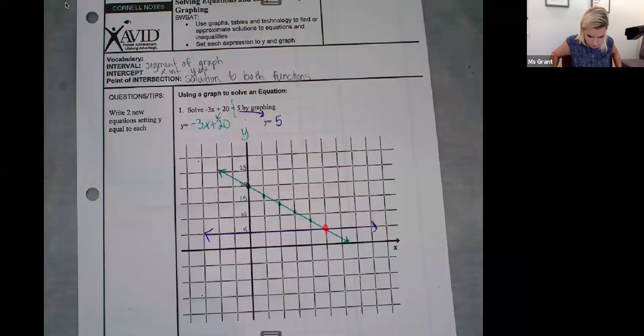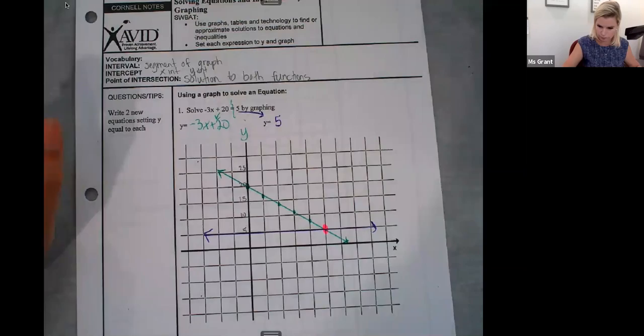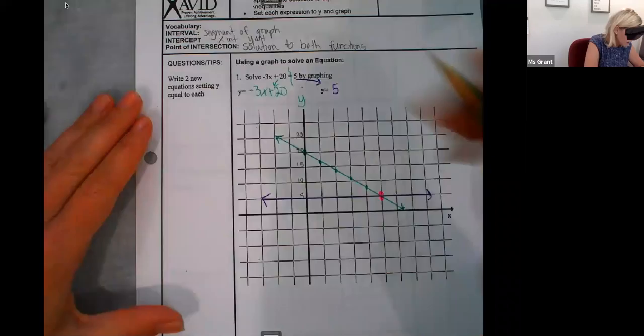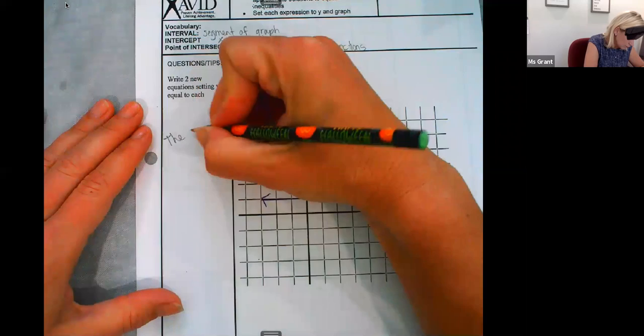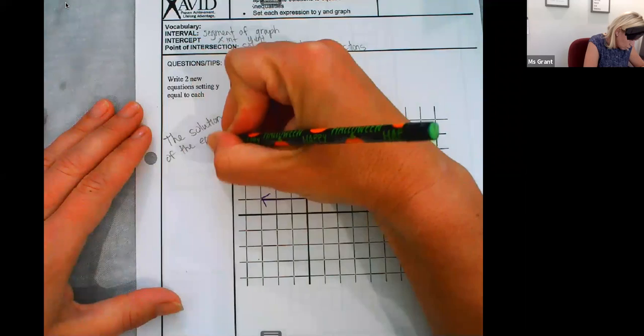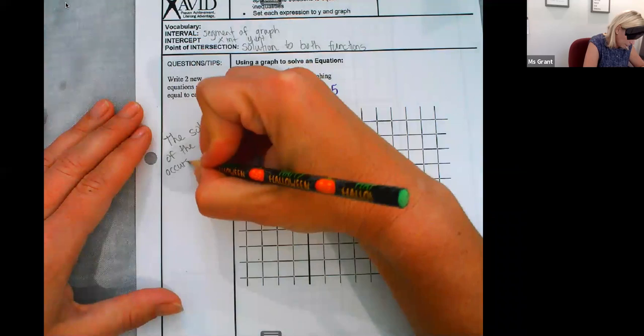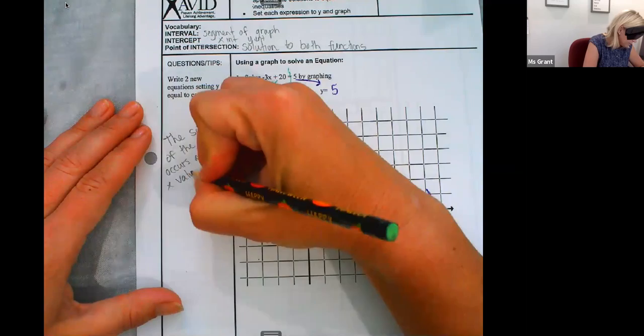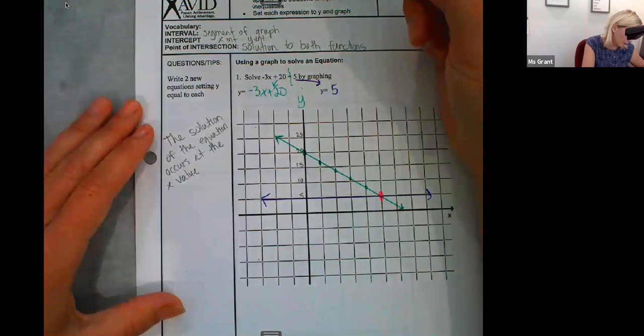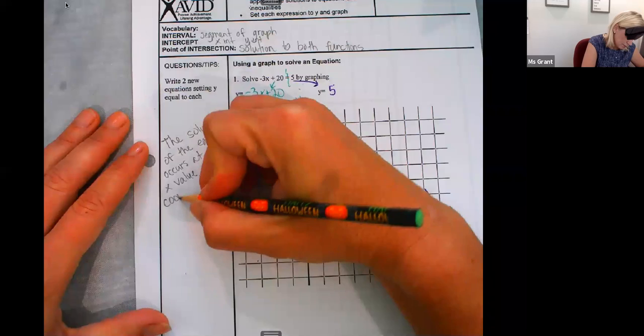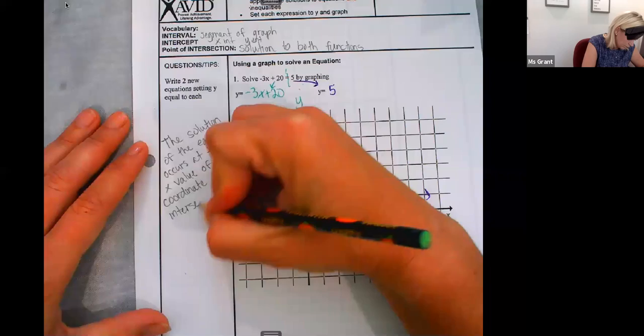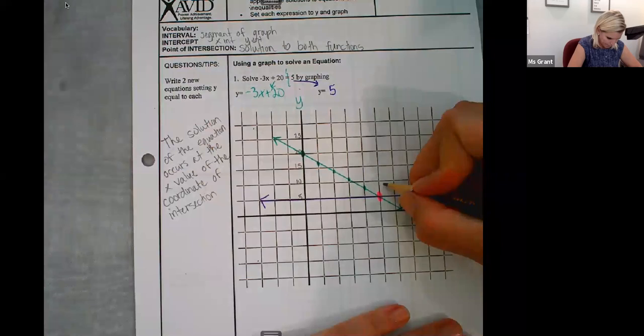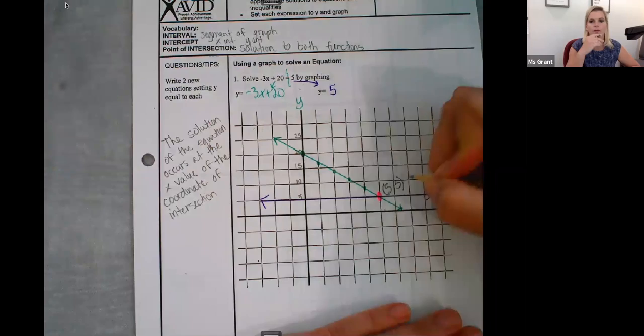I care where they intersect. The point of intersection is my solution. It's there. Let's write this out, this matters. The solution of the equation occurs at the x value of the coordinate of intersection. So this is one, two, three, four, five, five comma five.